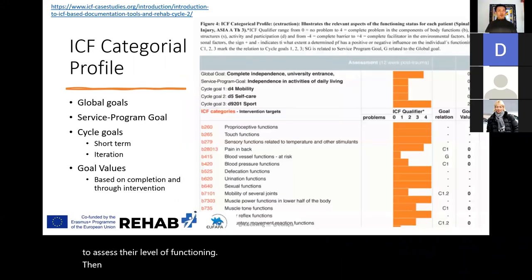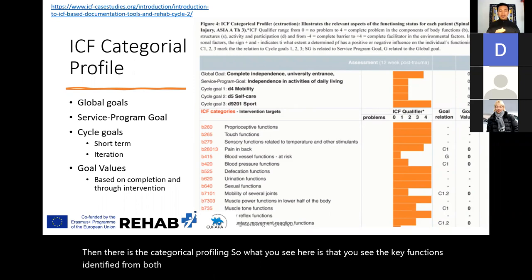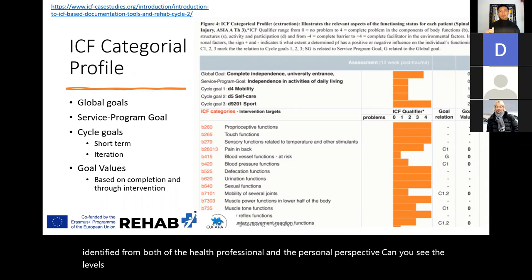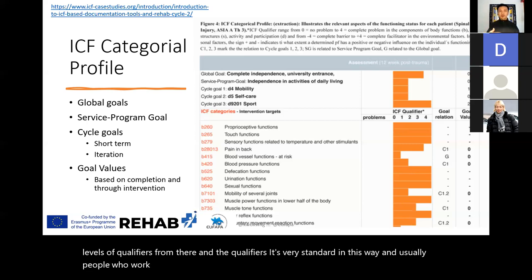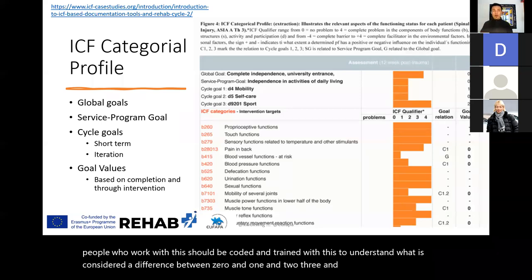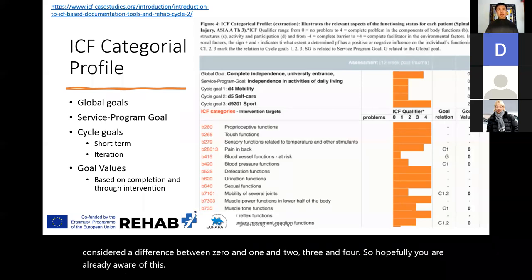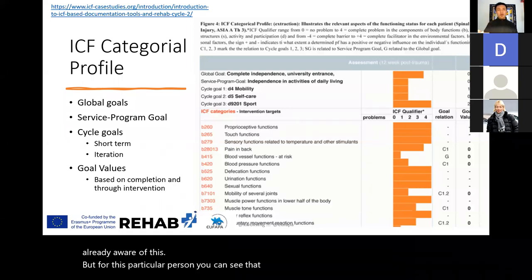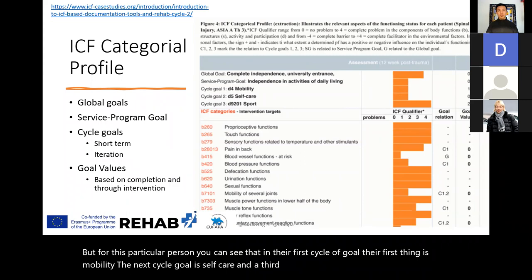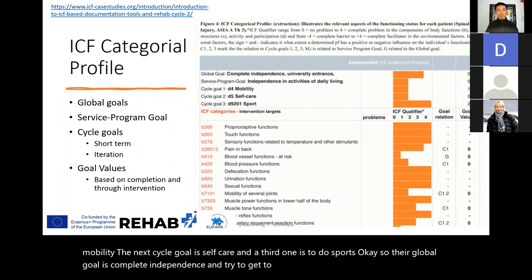Then there is the categorical profiling, where you see the key functions identified from both the health professional and personal perspective, along with the levels of qualifiers. The qualifiers are standard and people who work with this should be trained to understand the difference between zero, one, two, three, and four. For this particular person, the first cycle goal is mobility, the second is self-care, and the third is to do sports. The global goal is complete independence and getting to university, as this person was a 19-year-old male.